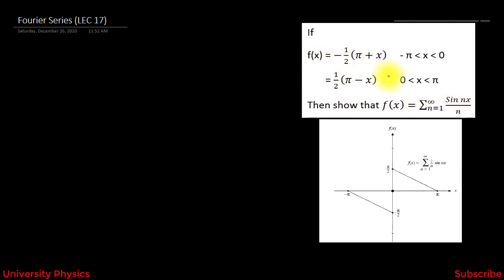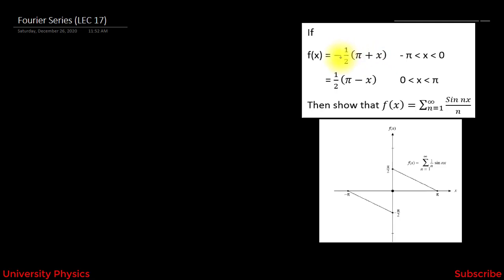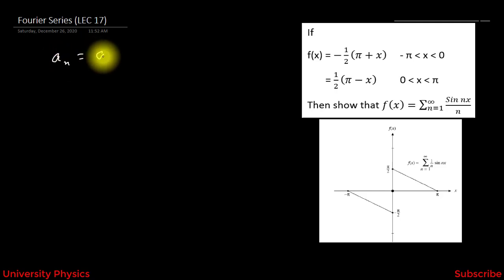Given that f(x) equals this piecewise definition, we need to show f(x) = sin(nx)/n. First, we have to recognize this function — whether it is an even function or an odd function. When we put x equal to -x, we do not get the same value of f(x). Therefore, this function is an odd function. For an odd function, the values of a₀ and aₙ are both zero.